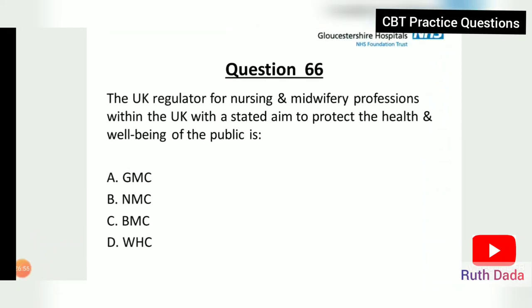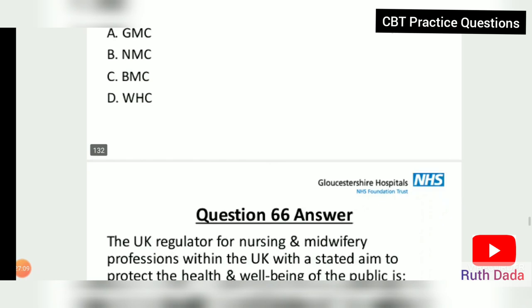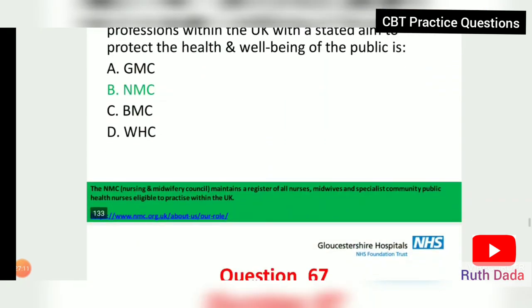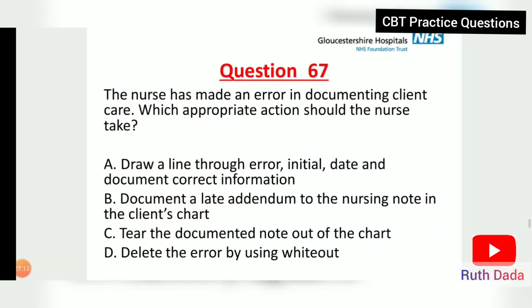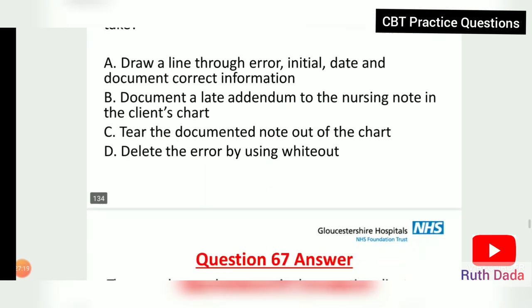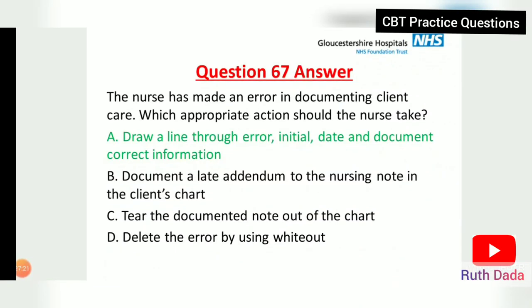Question 66: The UK regulator for nursing and medical professions with a stated aim to protect the health and well-being of the public is the NMC — mentioned earlier. Question 67: A nurse has made an error in documenting a client's care. What appropriate action should the nurse take? Draw a line through the error, initial, date, and document the correct information.